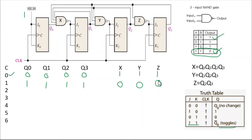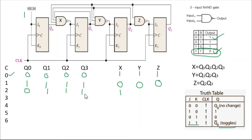Before the second clock, X=0, Y=0, Z=0. Since J1K1=0, J2K2=0, J3K3=0, those three flip-flops will not toggle — no change. But J0K0 is always one, so q0 will toggle from 1 to 0. After the second clock: q0=0, q1=1, q2=1, q3=1. Now find X, Y, Z: X has q0=0, so output is one. Y has q1=1, q2=1, q3=1 — all one, so Y=0. Z has q2=1, q3=1 — all one, so Z=0.